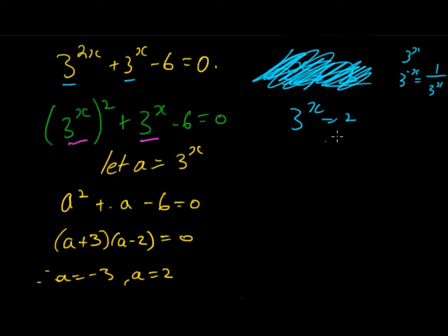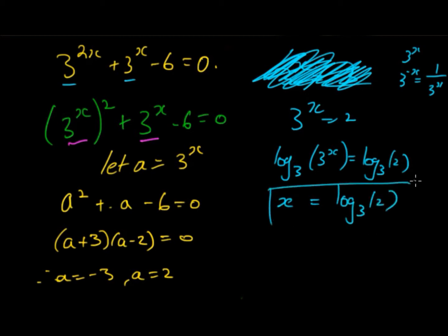So looking at the next one we have 3^x = 2. I'm going to take log base 3 of both sides. Bring this x down. Log base 3 of 3 is just 1. So I find that the solution is x = log₃(2).